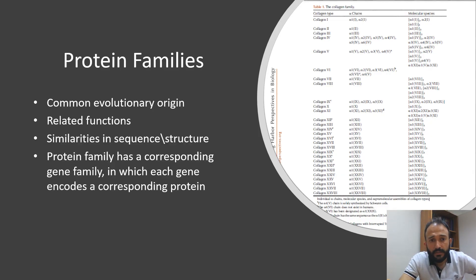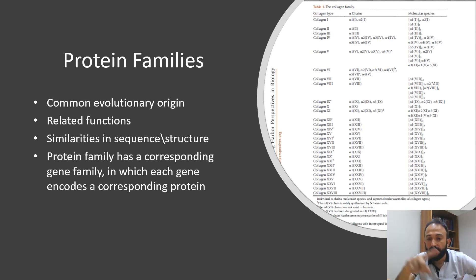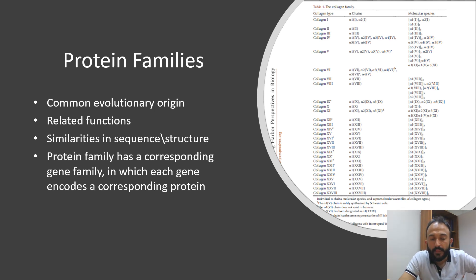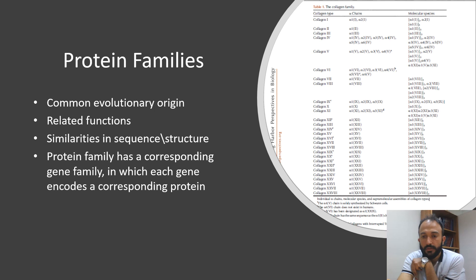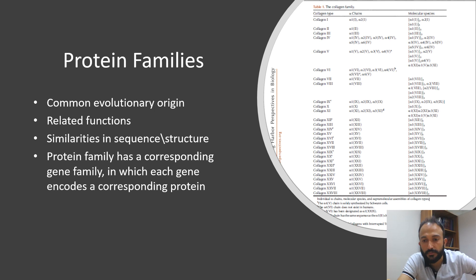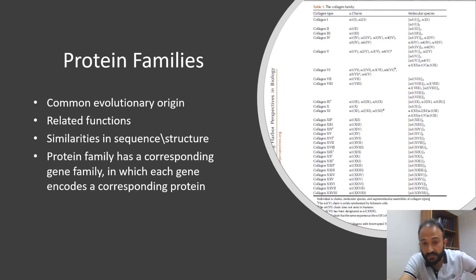Protein families have a common evolutionary origin — they all belong to the same ancestor. They have related functions; not identical functions, because if the functions were identical, what would be the purpose of having multiple genes? They have similarities at sequence and structure level. Protein families have a corresponding gene family, and each gene encodes a corresponding protein.